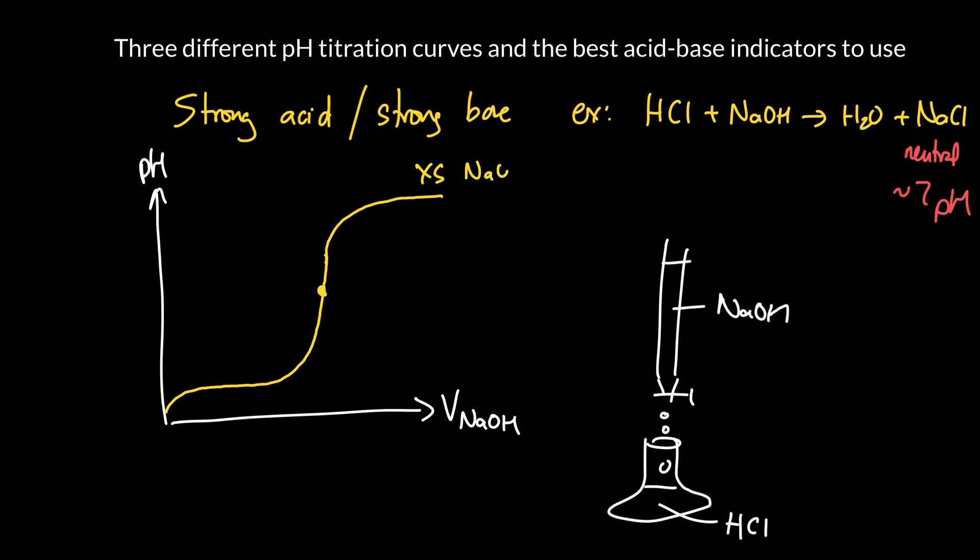In this region here I've got excess NaOH. In this region I've got excess hydrochloric acid, and in this region I've got sodium chloride. We discussed it being a neutral salt so it's going to have a pH of about seven. We're not going to calculate the pH of the titration curve, we're just going to leave it like this qualitatively.